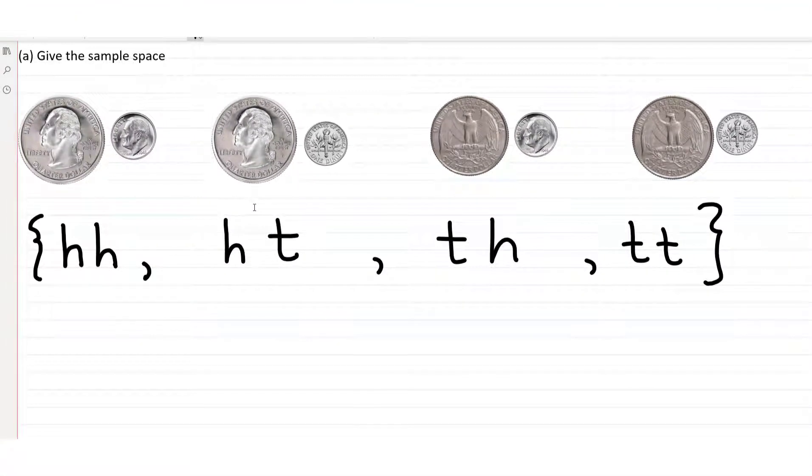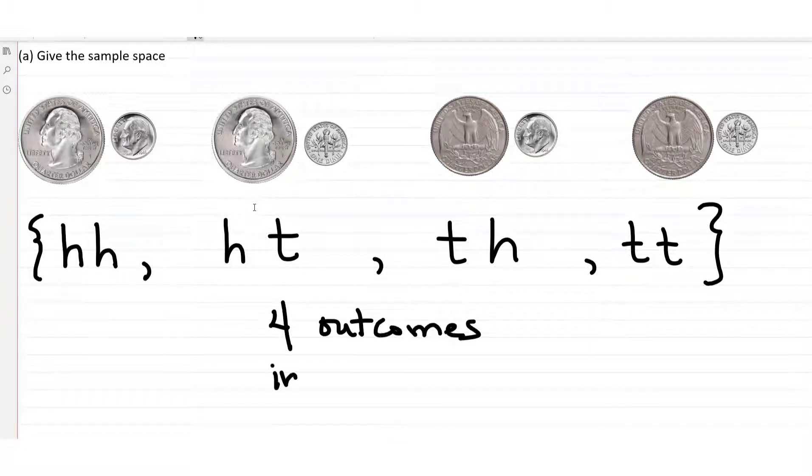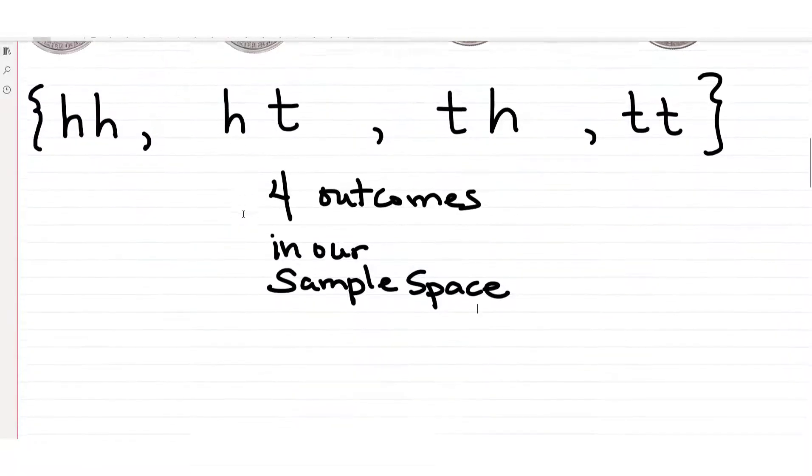This set of outcomes is our sample space. Notice that there are four outcomes in our sample space, and each of these outcomes is equally likely since we have fair coins. So now let's use this knowledge about our sample space to answer the other parts of the question.